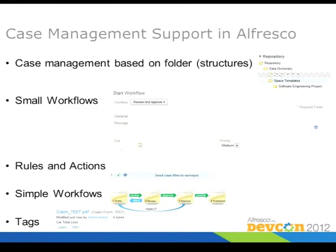Let's have a look at the default case management support in Alfresco. We can have folder structures and build templates — so whenever we get a new case, we pull the template and the folder structure is in place. This is adjustable by users. We have small workflows like the ad hoc workflow, which might help support certain case management requirements. We have rules and actions — we can configure things like sending an email when something happens, or running a script that fetches data from an external CSV file. With these existing things we can already do many things in Alfresco — we just have to use them and be a little creative.